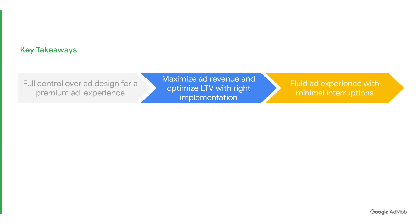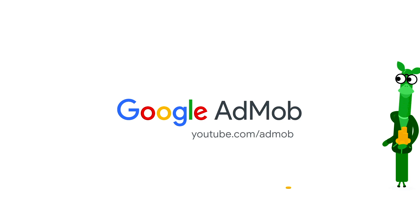Finally, native ads are a great way to offer your users a fluid ad experience with minimal interruptions. Once again, thanks for watching Google AdMob tutorials. We hope you found this one useful. Before you jump off, we have more resources to share down in the description box to make sure your native ad experience with us is the best one possible. And be sure to subscribe to the Google AdMob channel for best practices and tips on how you can grow your app further.